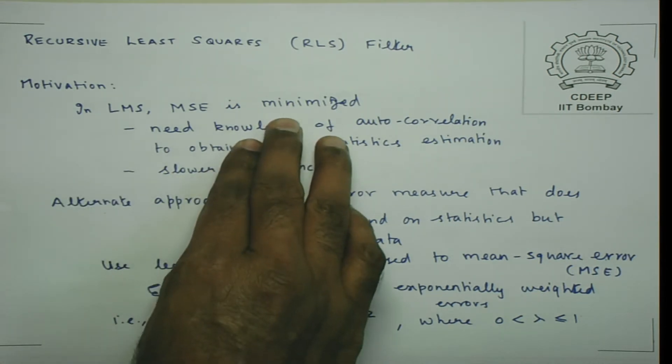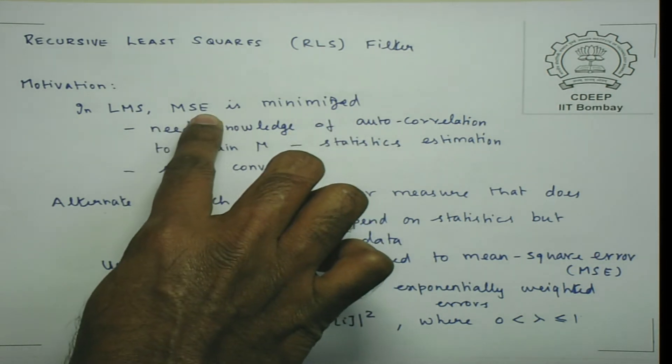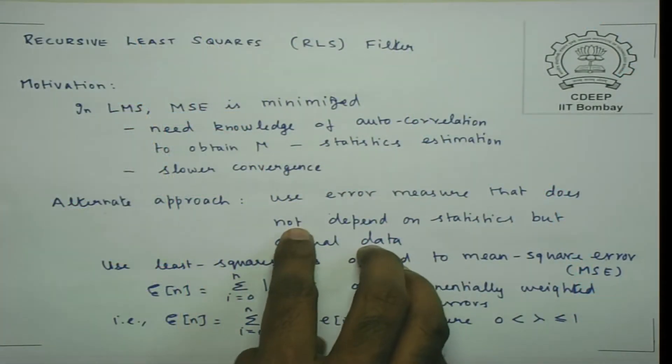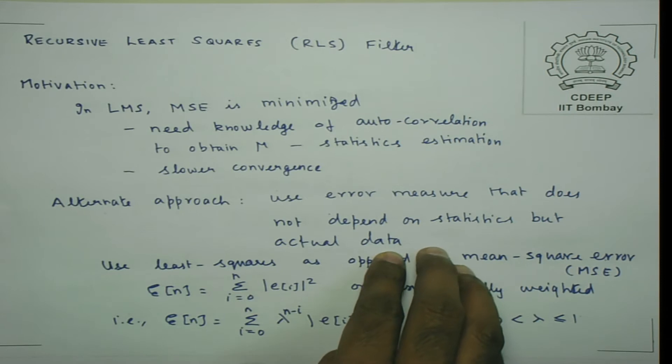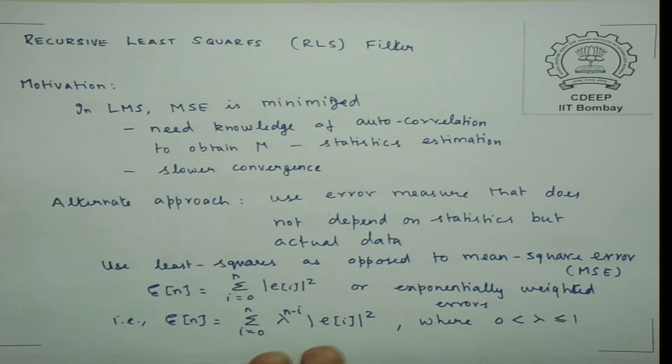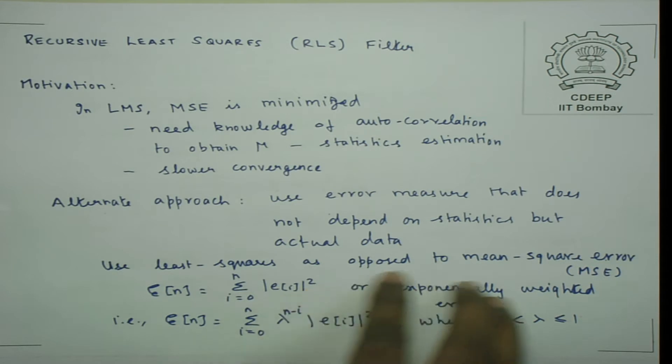If we want to move away from statistics, the alternate approach is rather than looking at the mean square error, can we look at the deterministic error? The simple error difference has issues — it could be positive or negative — and we need a function with good differential properties. One such error function does not use statistics but depends on the actual data, and by depending on actual data we make the system time varying, which is one of the requirements for adaptive filters.